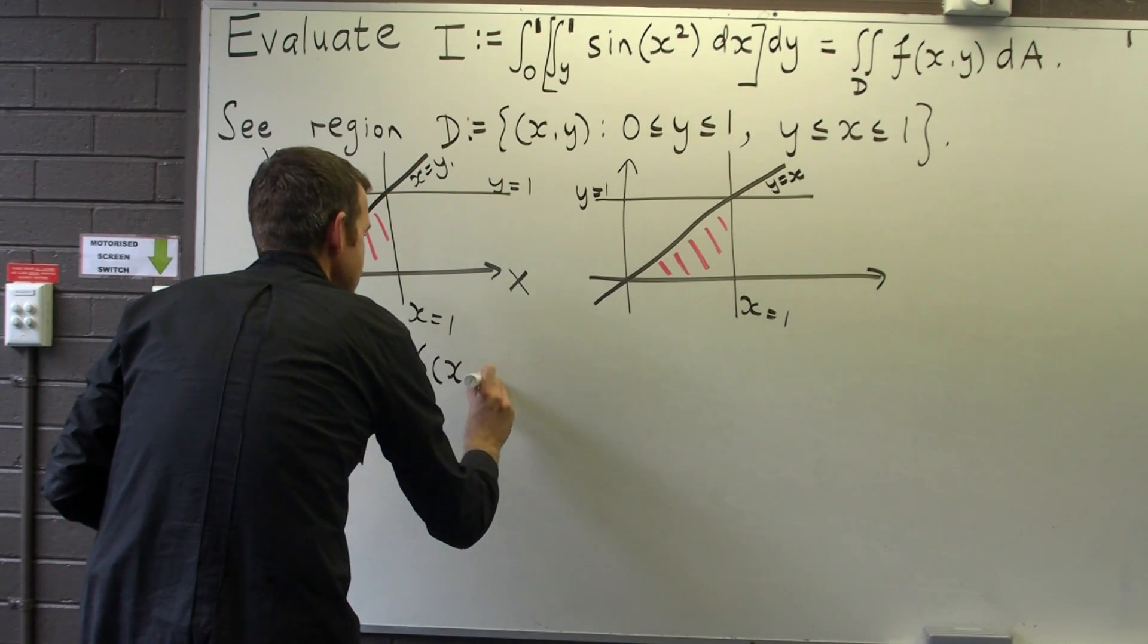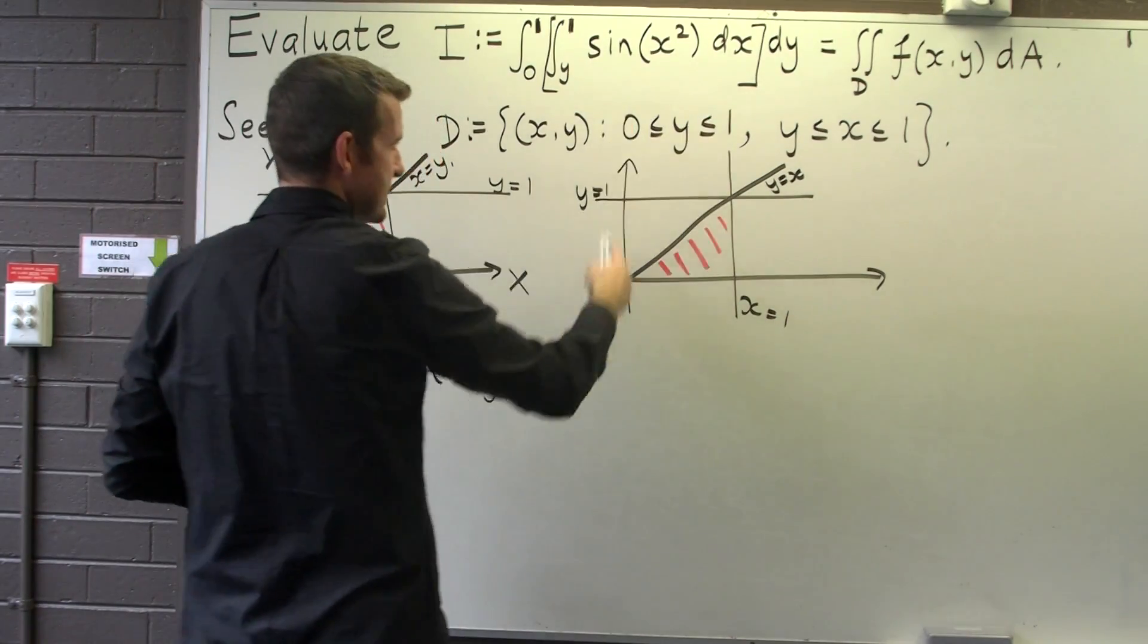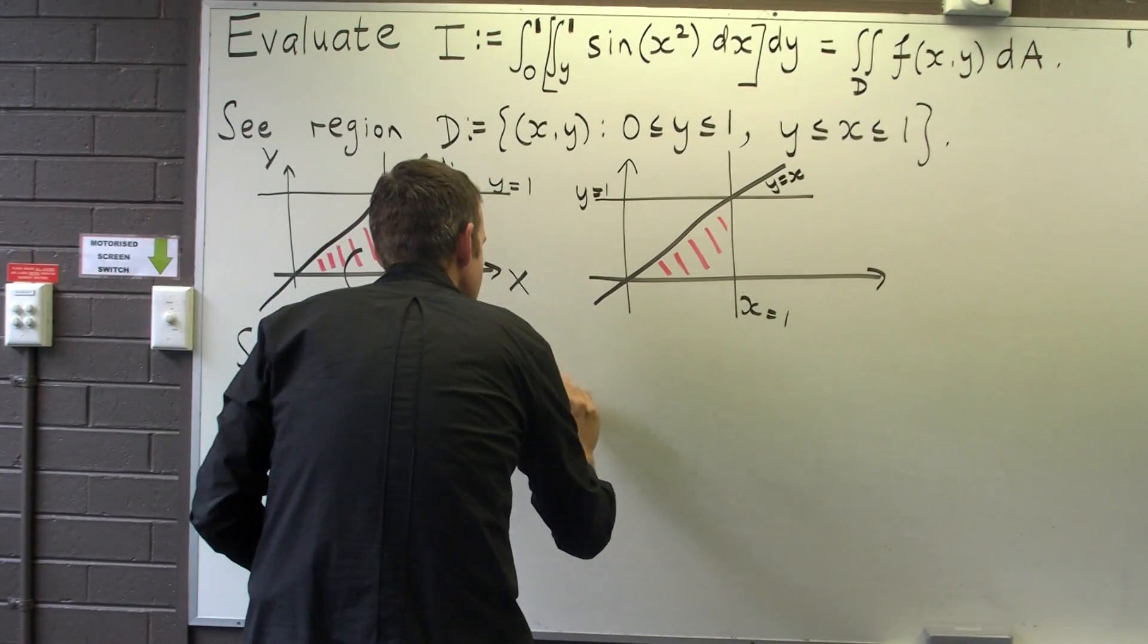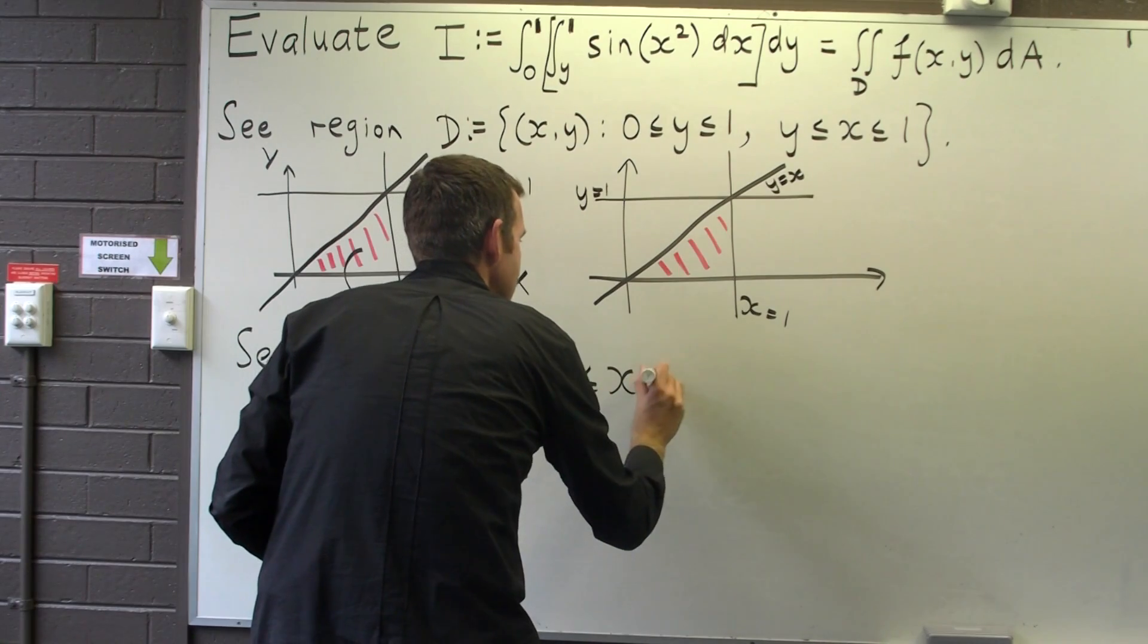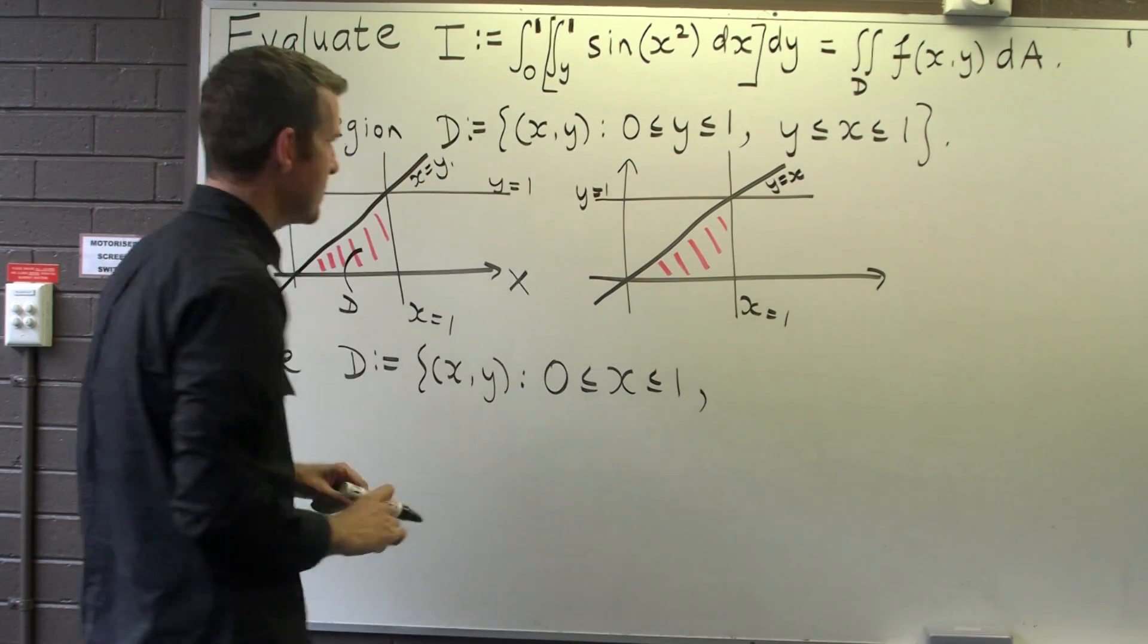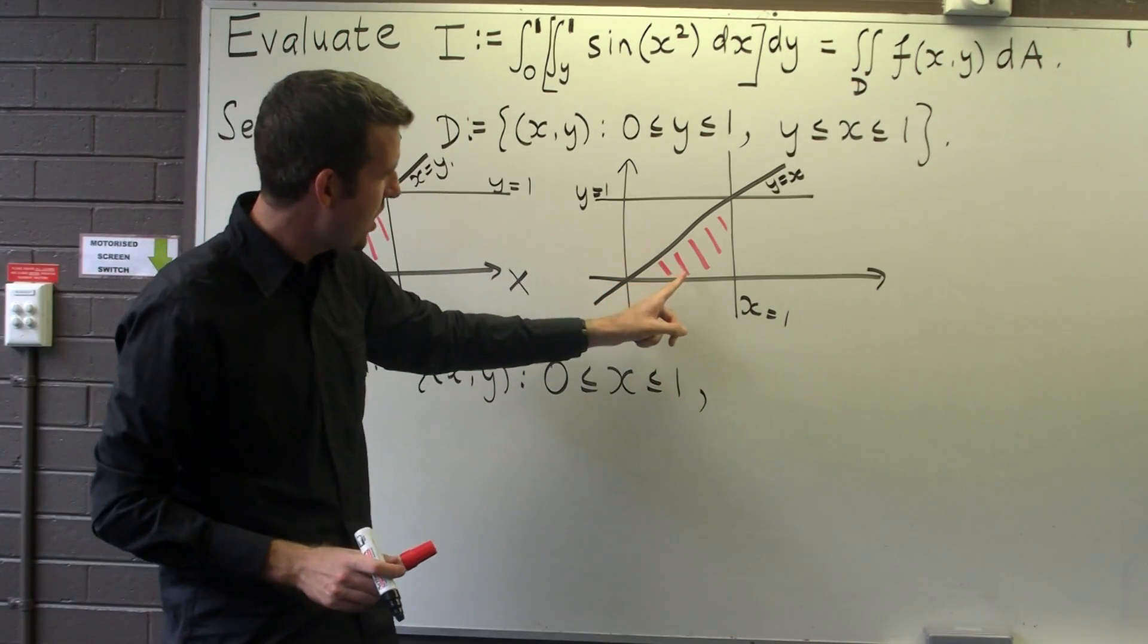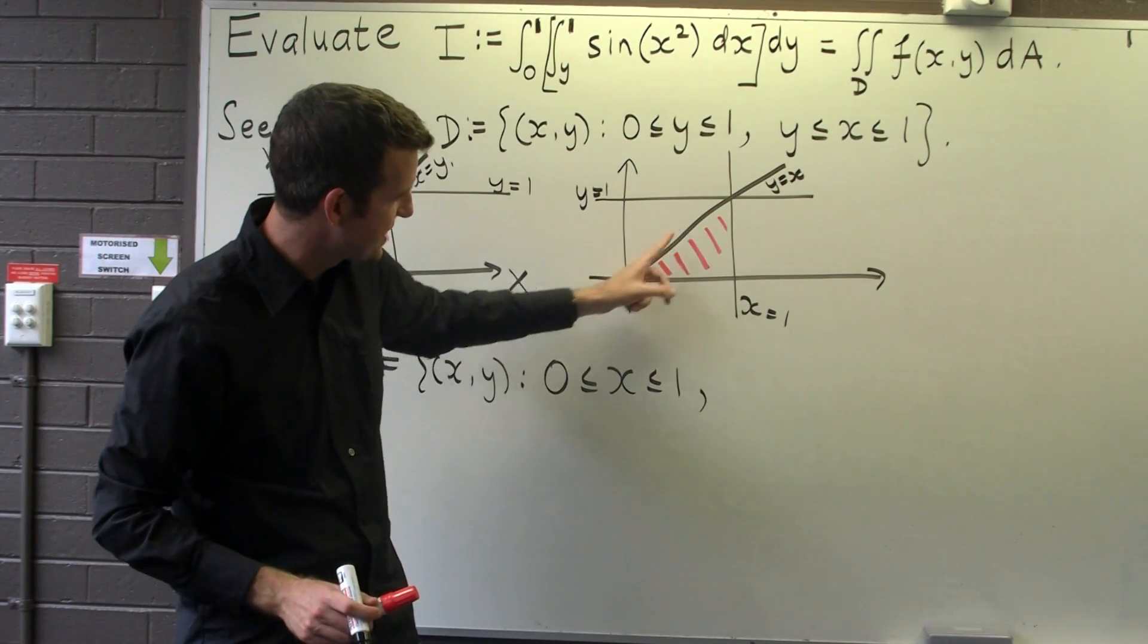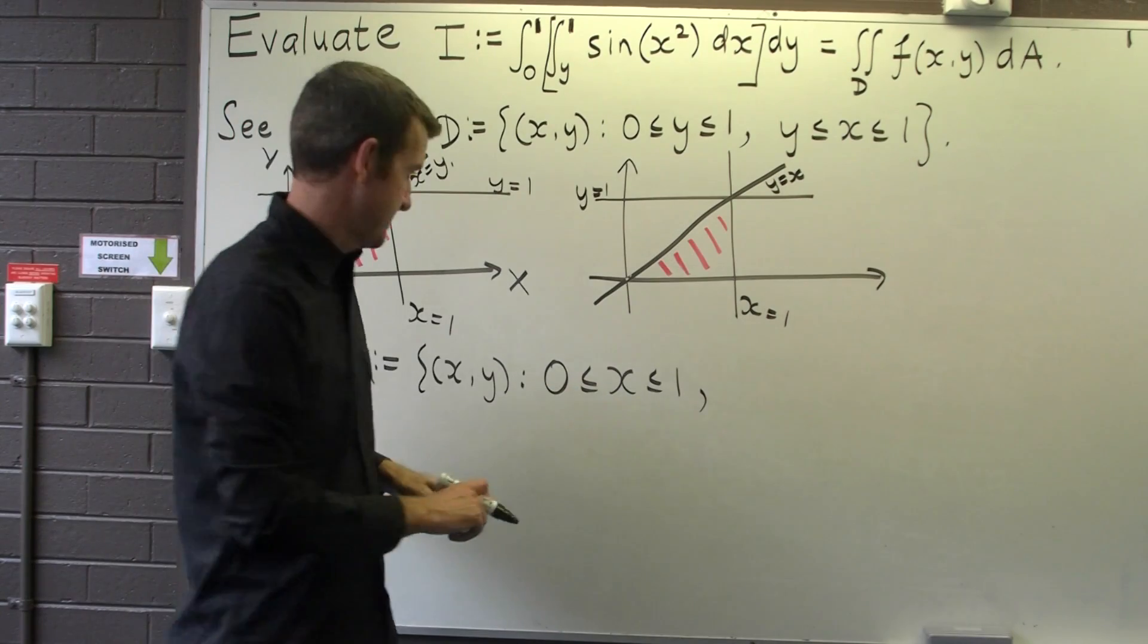So x is going to be between 0 and 1. And y is going to be above this line but below this line.